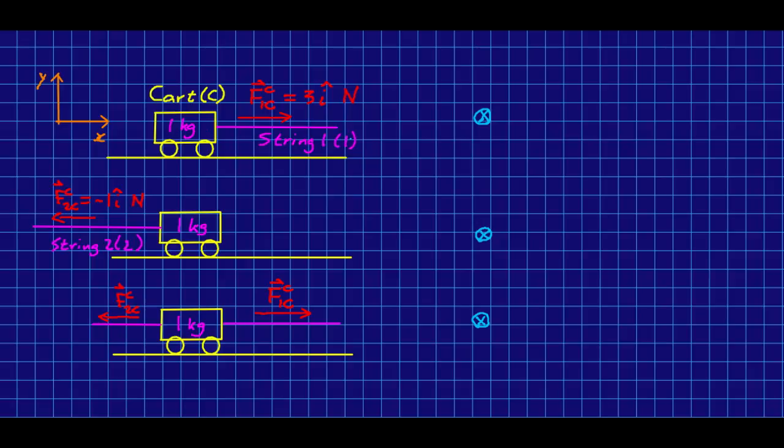Let's look at a cart being pulled by a string. Let's say that there is a force being exerted on it by this string one, which we know is three newtons to the right. And let's figure out the acceleration. This is going to be very simple. So on the free body diagram, we know that we've got this. And we also know that this cart is in contact with the track.